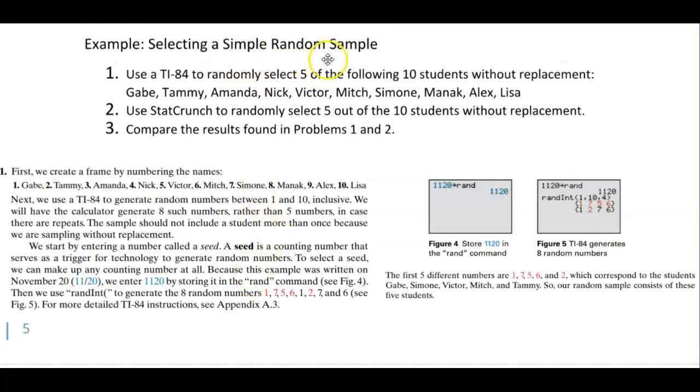Okay, here's an example of selecting a simple random sample. In this example we're going to use a TI-84 to randomly select five of the following ten students without replacement.